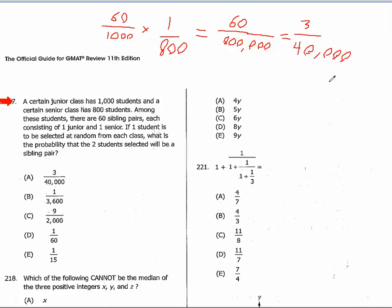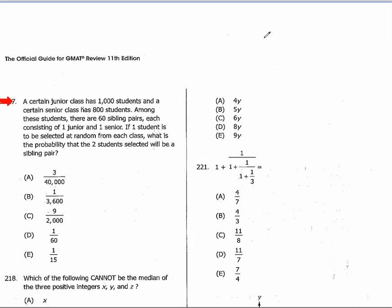The first step is to confirm this is a dependent event. The chances of selecting the right sibling depend on what happens the first time. We've got these 60 siblings, and when we select one, it changes the odds of whether we're going to select the right person the second time.